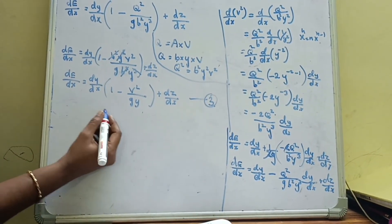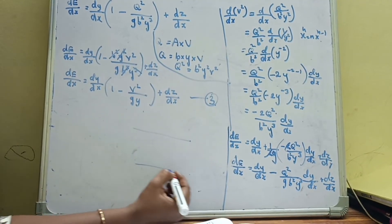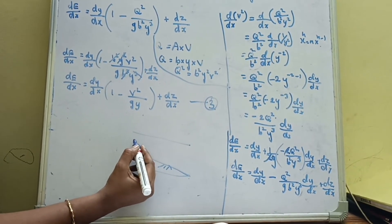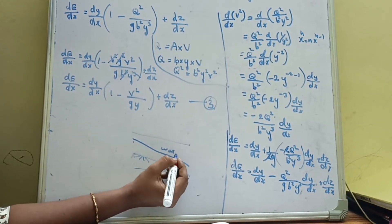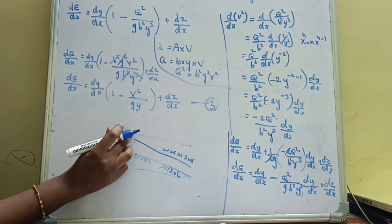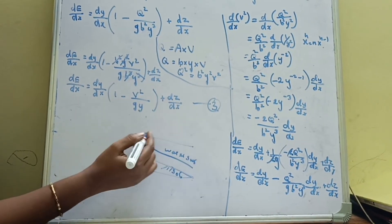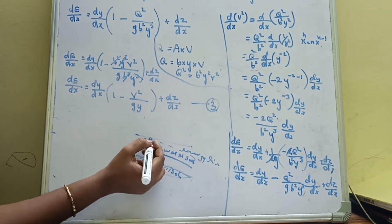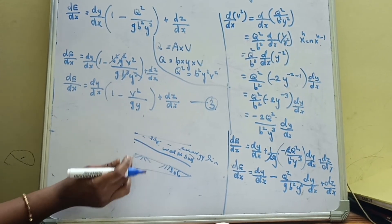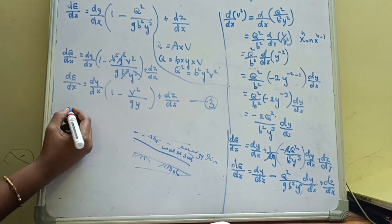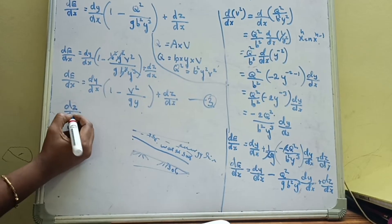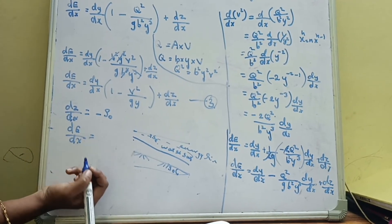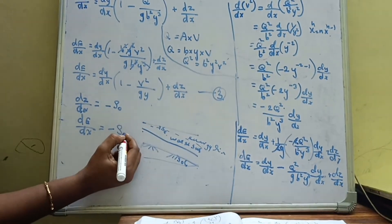Here we consider a rectangular channel. The flow direction is x, this is the datum line, this is the bed of the channel, and this is the water surface showing the depth of flow, and this is the energy line. The slope from the datum to the bed of the channel is S-naught. The distance from the datum to the bed is z, so dz/dx equals minus S-naught (negative because depth decreases in the flow direction). The energy line slope is S-e, so dE/dx equals minus S-e.